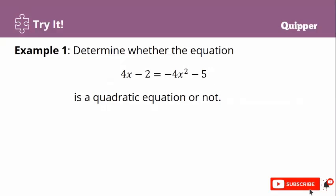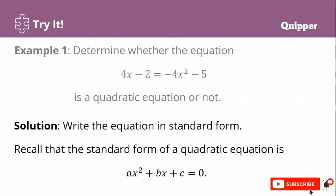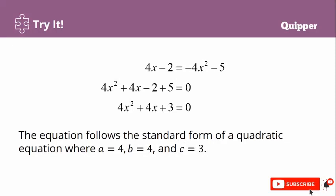Let's try an example. Determine whether 4x² equals negative 4x² minus 5 is a quadratic equation or not. By looking at the given problem, we can say that it is not written in standard form. First, write or transform the given equation to standard form. Recall that the standard form of a quadratic equation is ax² plus bx plus c equals 0. Then, apply the addition property of equality or transpose the terms to one side of the equation. With that, we get 4x² plus 4x² plus 5 equals 0. Combine similar terms and we get 4x² plus 4x plus 3 equals 0, since negative 2 plus 5 is equal to positive 3. We now have the quadratic equation in standard form.